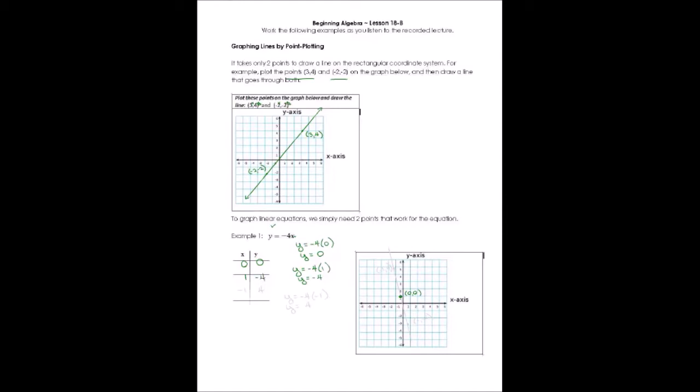So another point on my line is (1, -4)—positive 1 for x, negative 4 for y. So I'll have to go down 1, 2, 3, 4 points. Here's (1, -4).